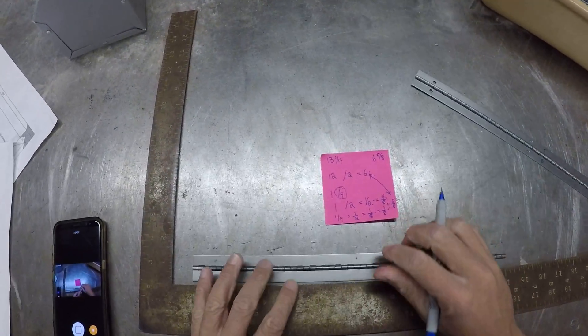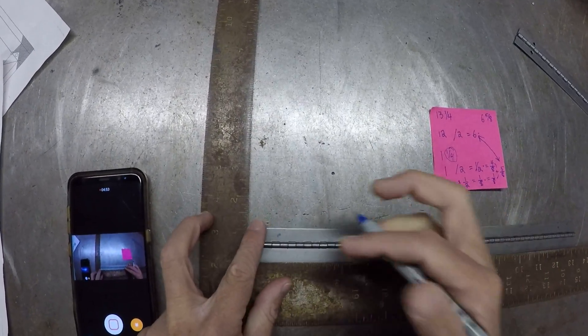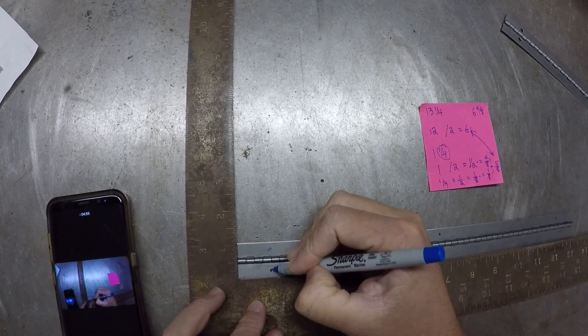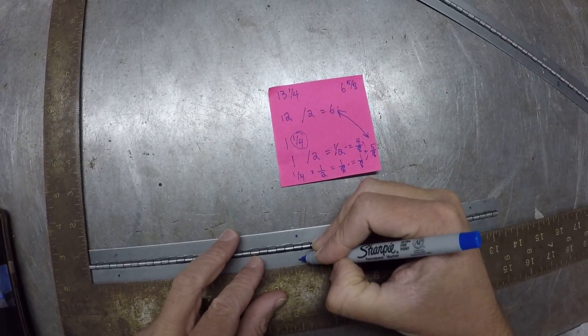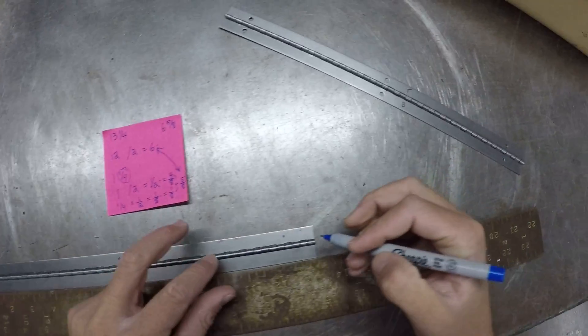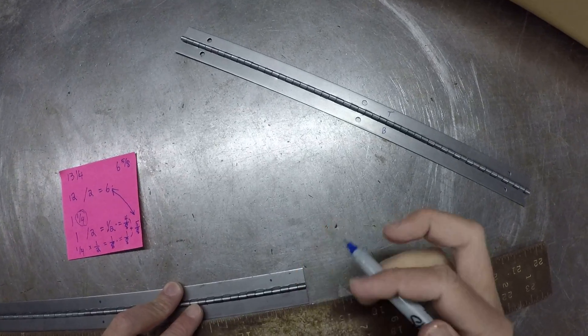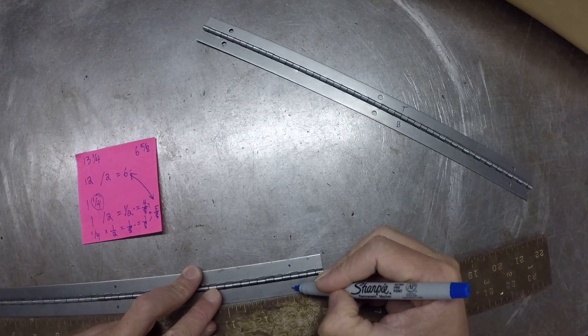Flipping this around, I would do the exact same thing on the other side. One inch with a mark in the middle, six and five eighths with a mark in the middle, line this up with a one and come down an inch.